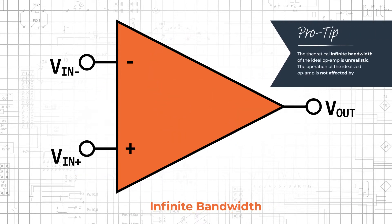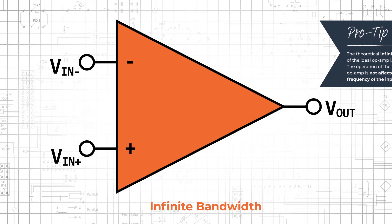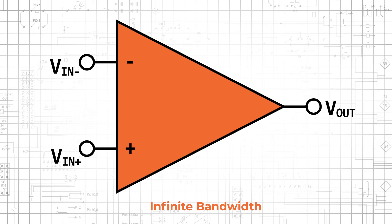The ideal op amp's infinite bandwidth is the most unrealistic. The VCVS model does not contain any frequency-dependent elements, and consequently the operation of the idealized op amp is not affected by the frequency of the input signal. The bandwidth of many general-purpose op amps is actually rather narrow, and real-life op amp frequency response plays a prominent role in many design and analysis tasks. We'll cover this important topic more thoroughly in a future video.